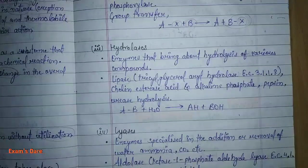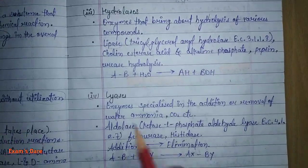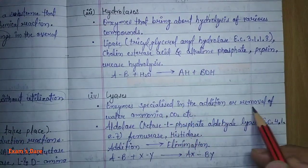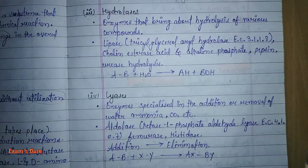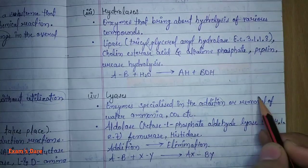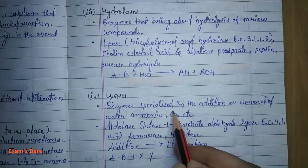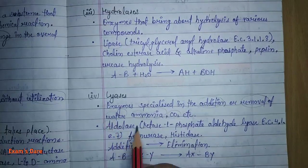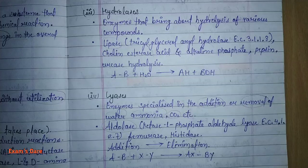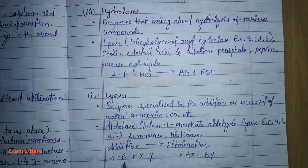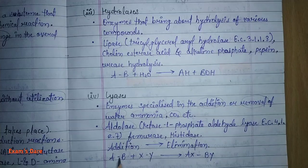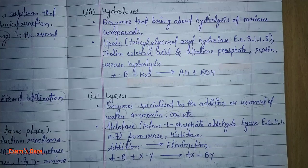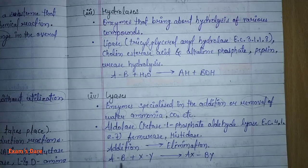Fourth are Lyases — enzymes specialized in the addition and removal of water, ammonia, and carbon dioxide. The best example is aldolase. In the reaction, A and B are broken down. A will be attached with X and B will be removed. Simultaneously, addition and removal both take place. We call these enzymes lyases.